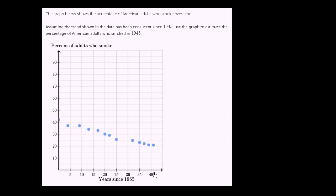The horizontal axis here, they say years since 1965. So this point right over here, this is zero years since 1965. So this really represents 1965.